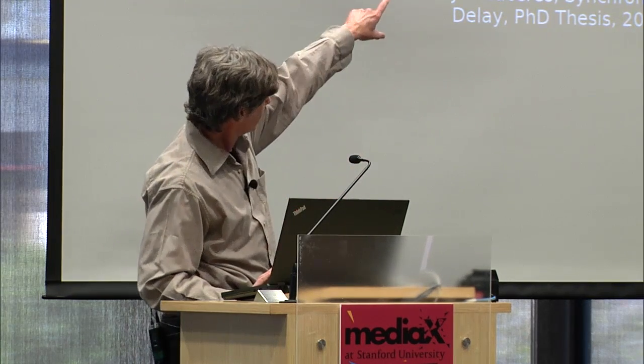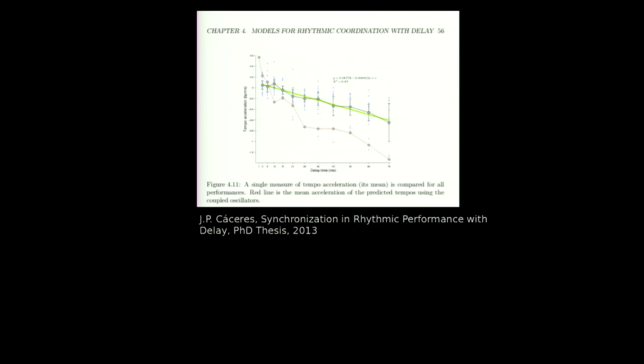A student here, Juan Pablo Caceres, was interested in creating a synthetic clapper — could he come up with an algorithm that mimics how one party in this coupled situation performs under delay? The red line shows his best algorithmic attempt. The gap between the green and red lines shows our algorithm isn't accounting for everything humans can do when facing a difficult acoustical situation. That got me thinking — as a musician, I'm always thinking ahead. If I'm reading a score, I'm reading a bar ahead. I'm a cellist; from an early age, you're forward in time.